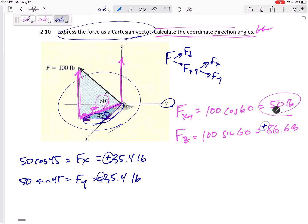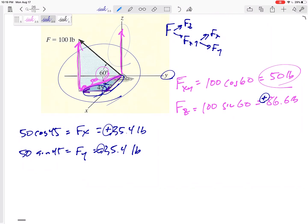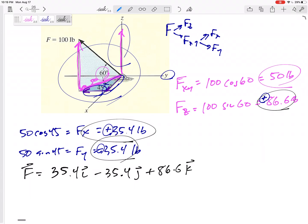All right, and then this Z, is this Z positive or negative? It's up, it's in the positive Z direction. So step one for this problem, writing it as a vector would be, what is it? Where's the X right there? 35.4 in the I. Where's the Y? Minus 35.4 in the J. Where's the Z? 86.6 in the K. Units are pounds. Box in your answer. That's the first part of it.